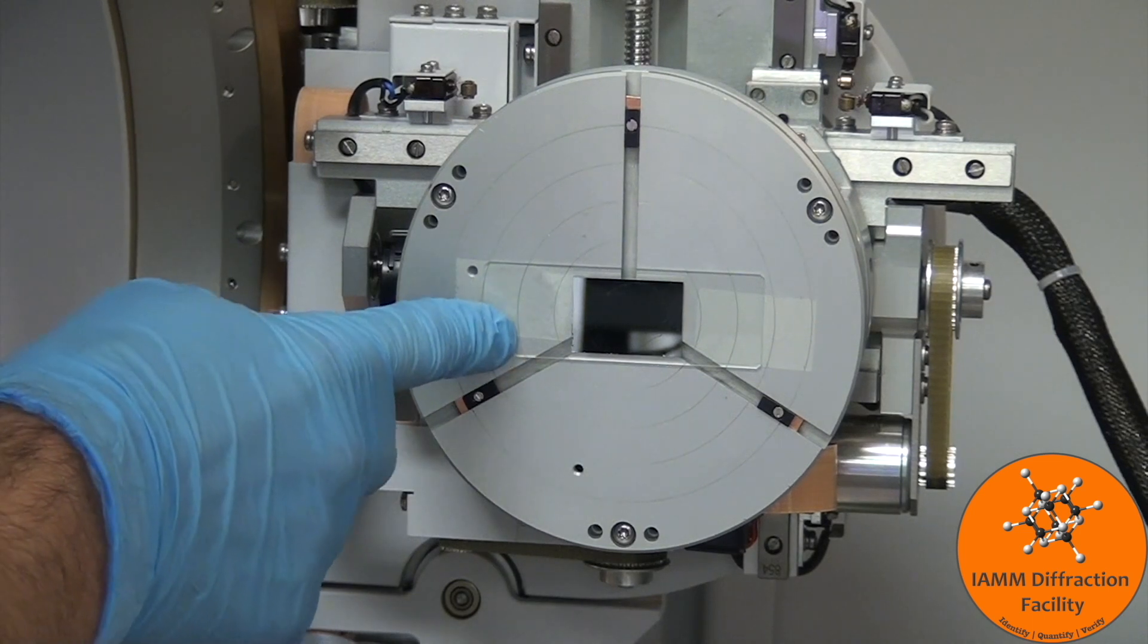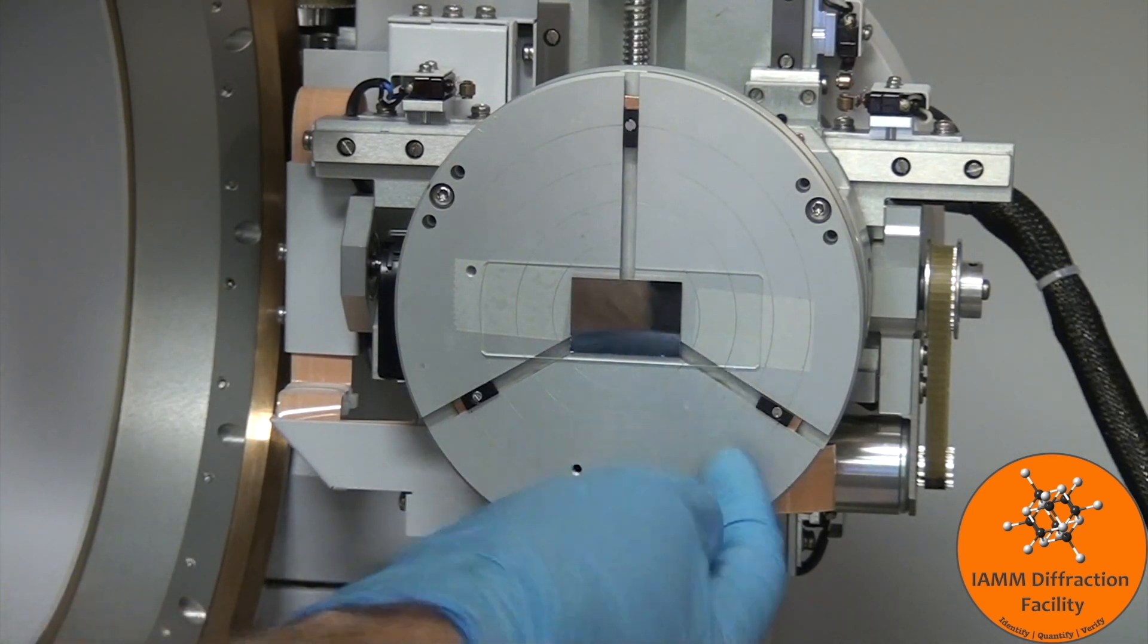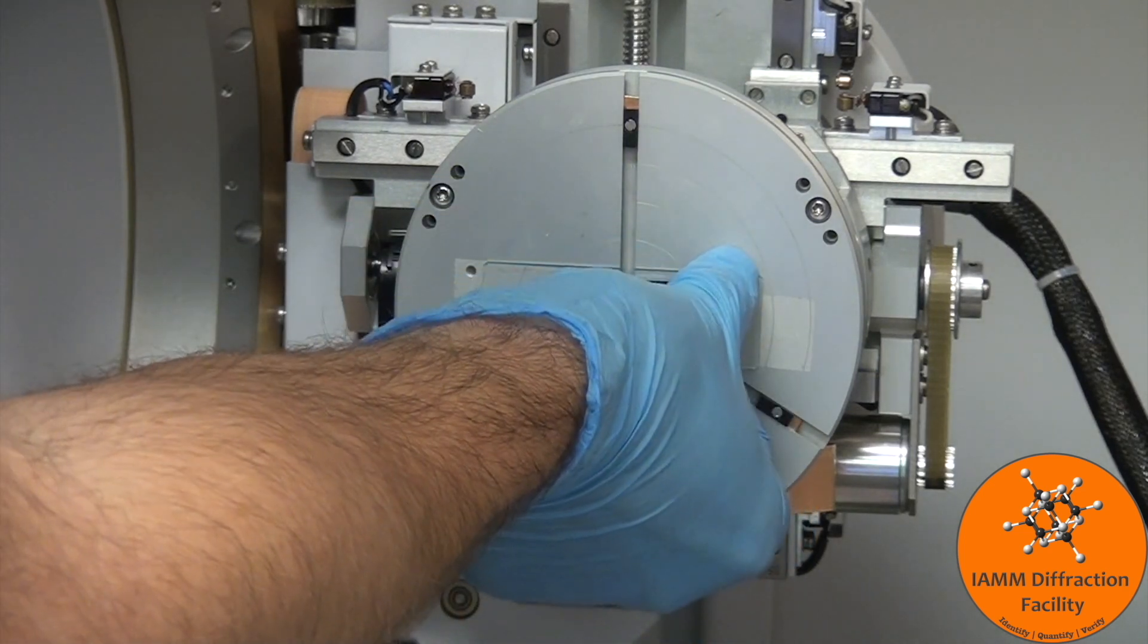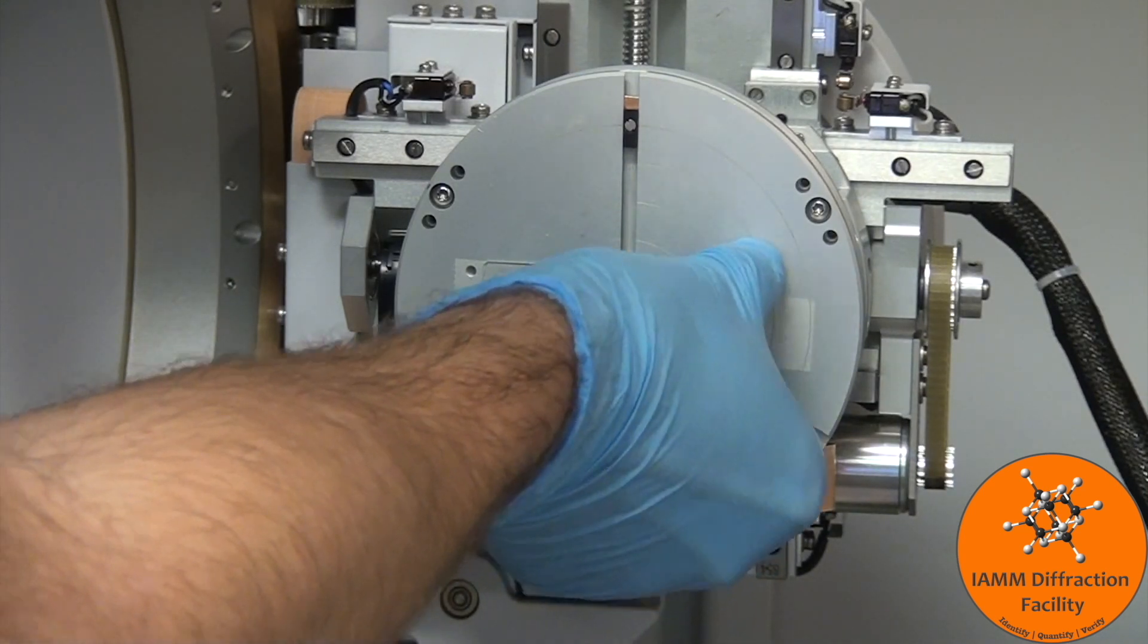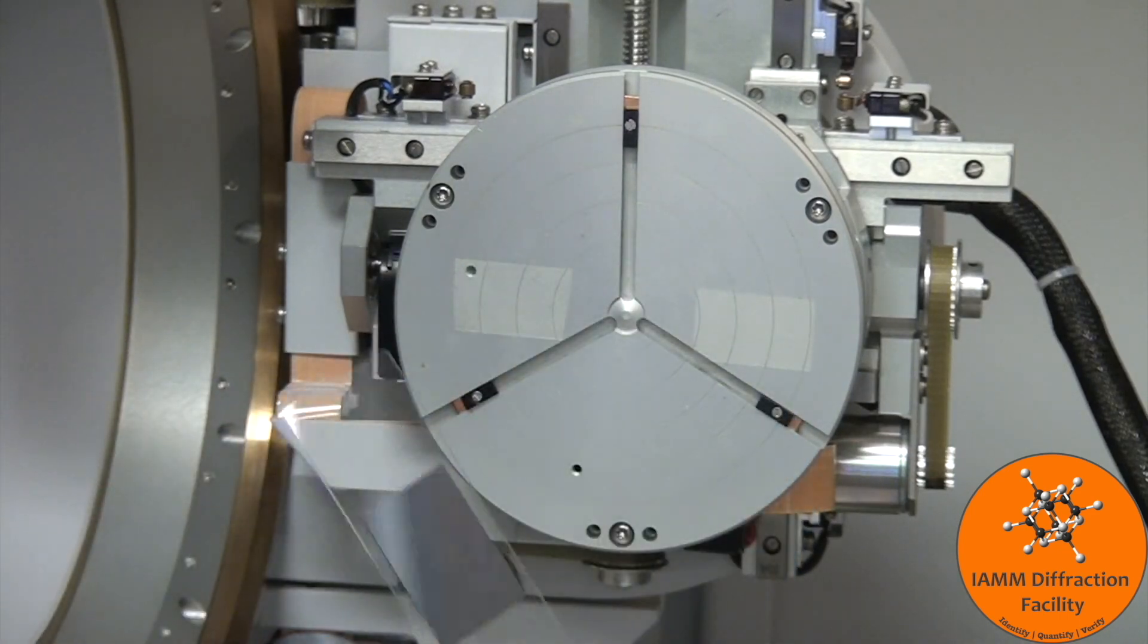To remove your sample and put a new one on, just get your fingernail underneath the slide where these lines are, and pry it up a little bit. Sometimes it can be a little tough. There we go. It comes off.